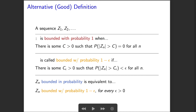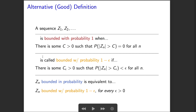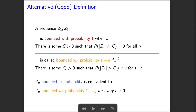One can think of this as saying that bounded in probability is the smallest weakening we can possibly have of bounded with probability one. It's not quite bounded with probability one — it's bounded with probability one minus epsilon, no matter how small that epsilon is.